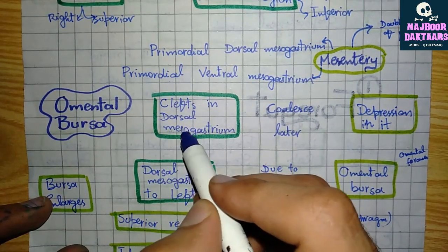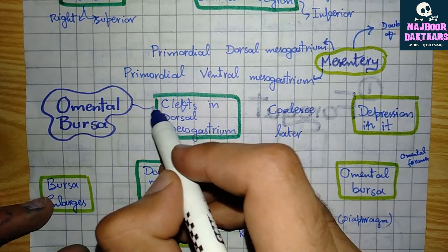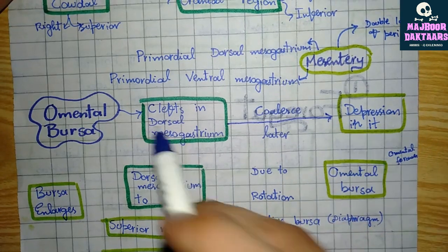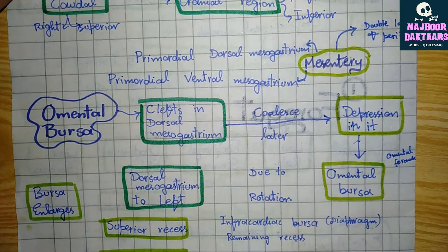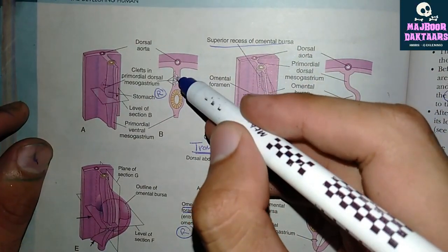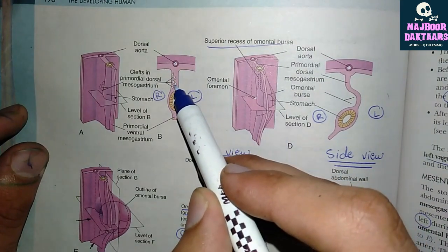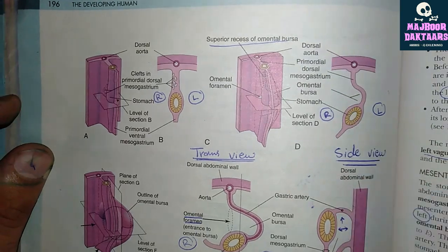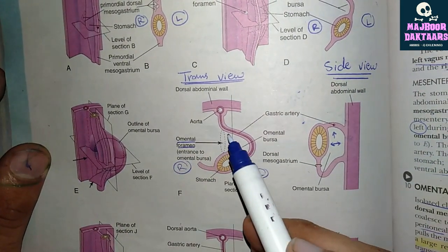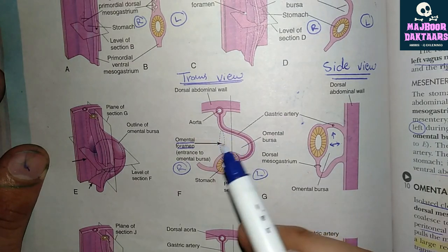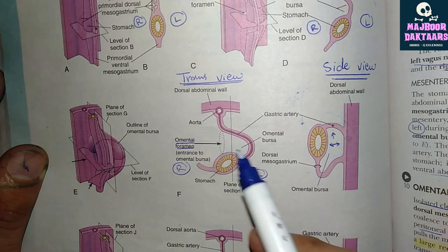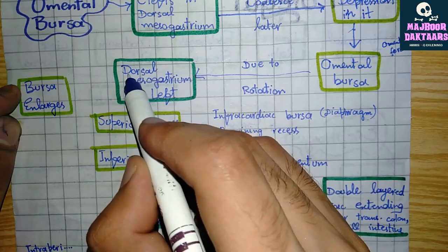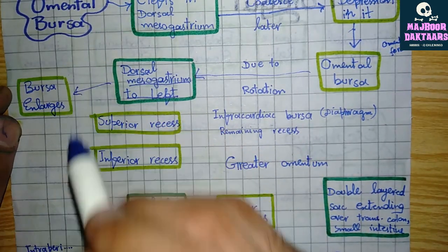For development of the omental bursa, clefts develop in the dorsal mesogastrium which then coalesce to form a depression known as the omental bursa. In cross-section, clefts form in the dorsal mesogastrium and combine to form this depression. When rotation of the stomach occurs — 90 degrees clockwise — the bursa enlarges and communicates with the peritoneal cavity via the omental foramen. Due to rotation, the dorsal mesogastrium moves to the left and the bursa enlarges.